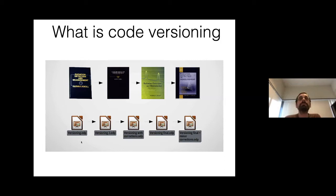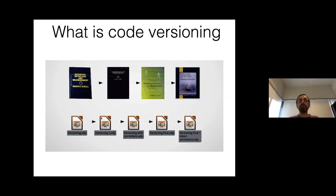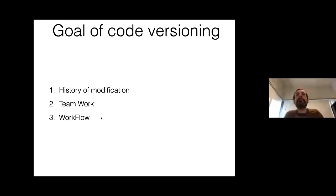Code versioning is something everyone has done — taking a file, renaming it as 'version 2', 'version 2 with corrections', and building up a collection of files that evolve over time. This gives you a history of all modifications, whether for papers, theses, or code. The main goal is to be able to go back in time to a working version if something goes wrong.